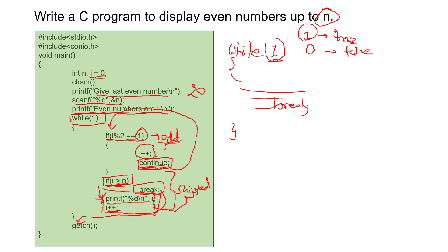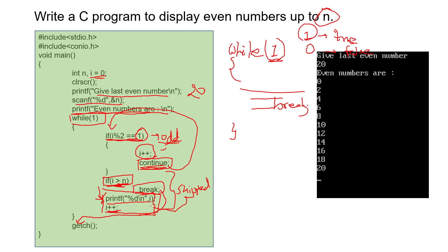I am executing this program and the output will be like this. Given last even number, I'm entering 20. And it will give output: even numbers are 0, 2, 4, 6, 8, 10, 12, 14, 16, 18.